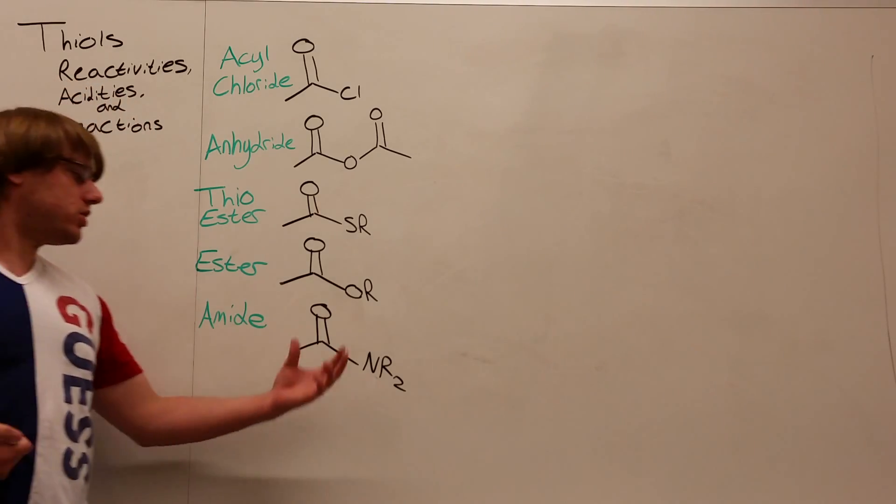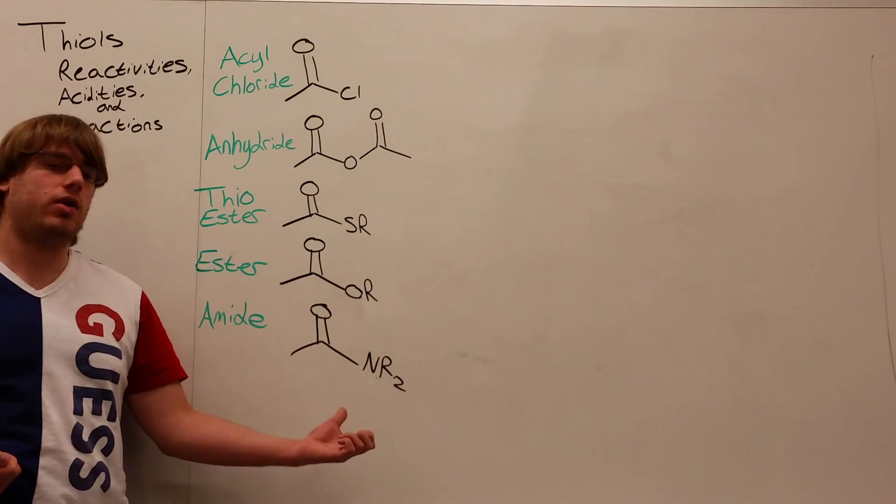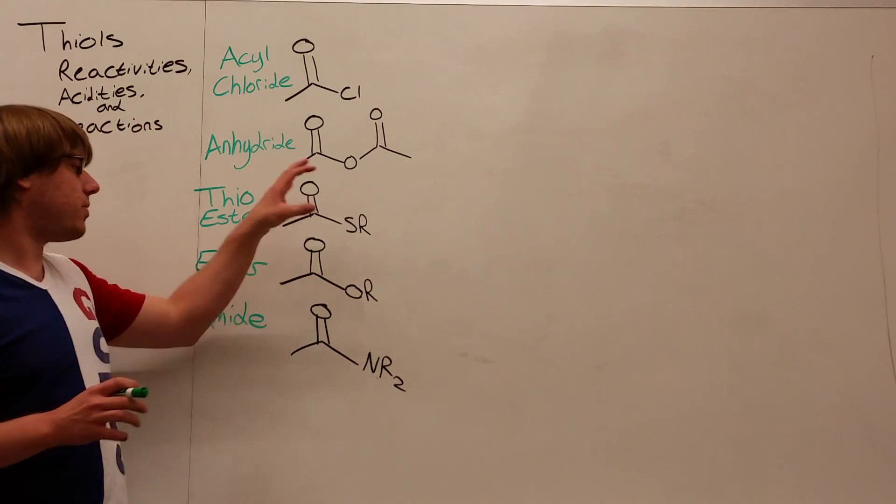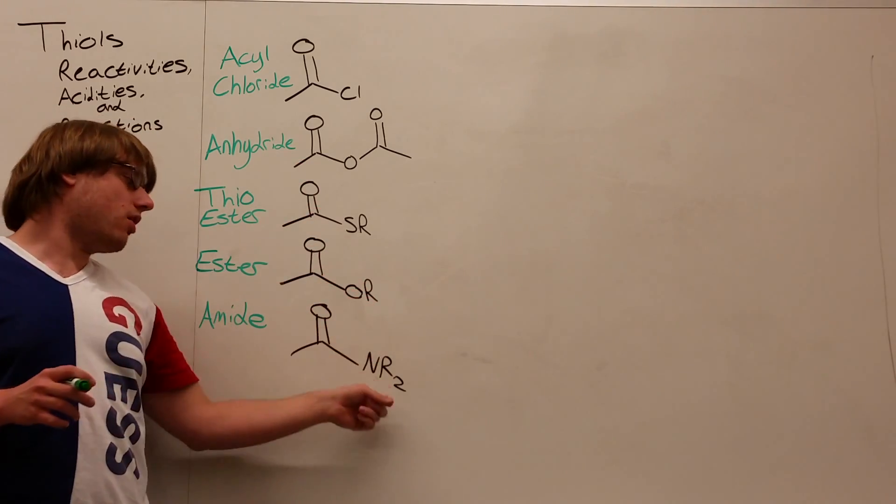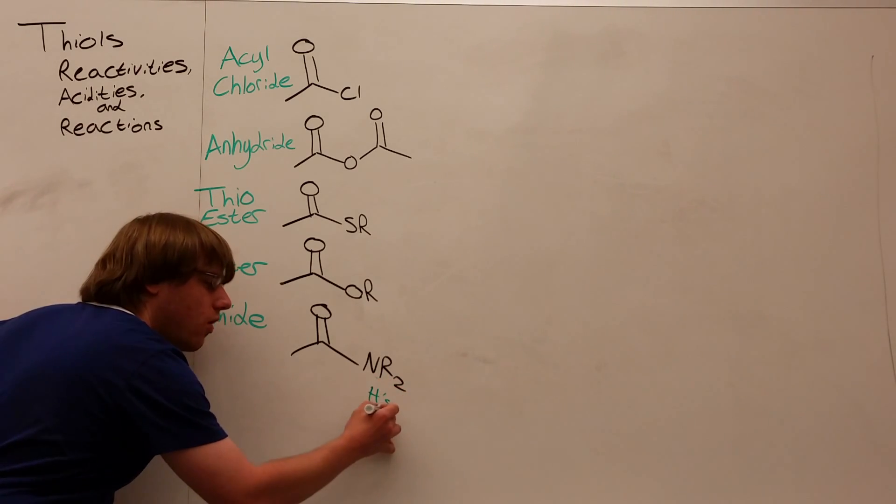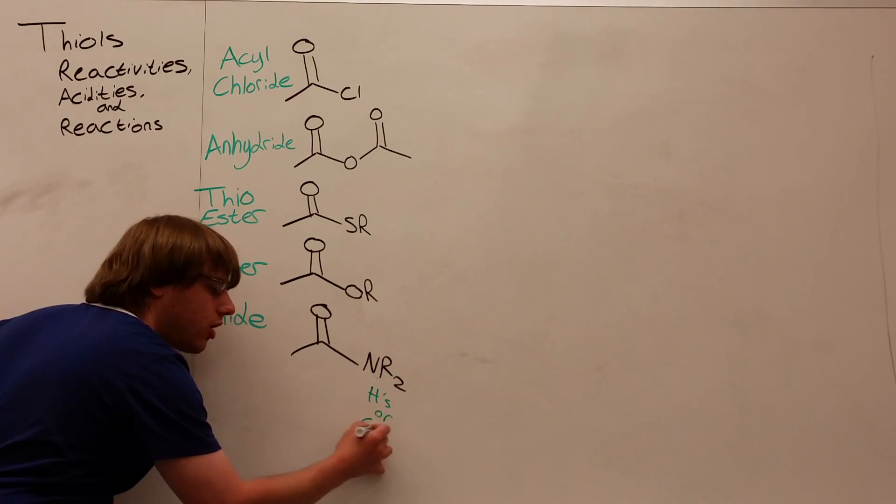Finally, we have the amide, which is the carbonyl that has a nitrogen on it, and then R2. And for amides, it's a little different from esters and thioesters. When I say R, in this case, that R could be hydrogens, any number of hydrogens, or carbons.